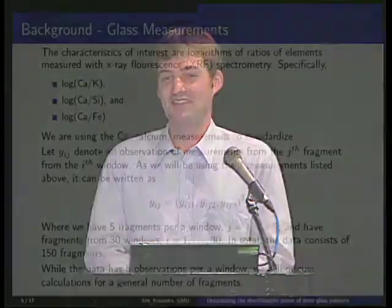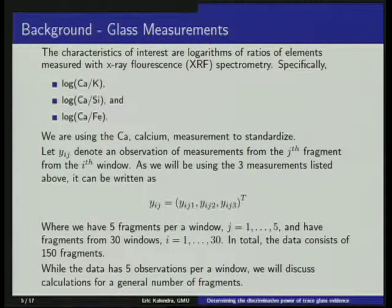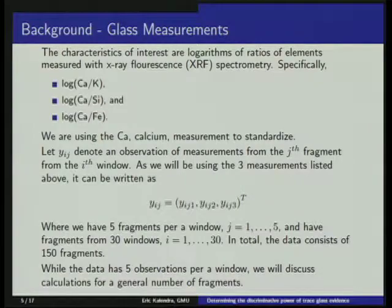I'm looking at three ratios standardized by calcium: potassium, silicon, and iron. I'm going to be treating these as a multivariate vector. The data I have is 30 windows, with five fragments sampled from each window, giving a grand total of 150 fragments.